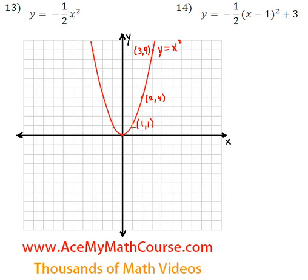And I also highlighted a few important points here. 1, 1, 2 and 4, 3 and 9. Of course on the other side we have negative 1 and 1, negative 2 and 4, negative 3 and 9.